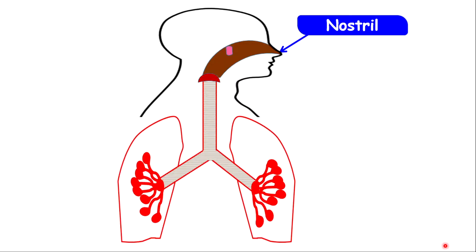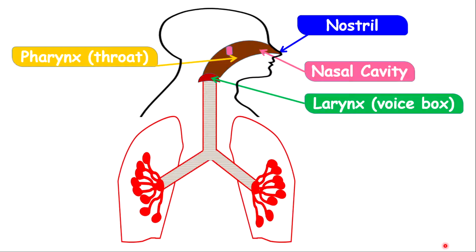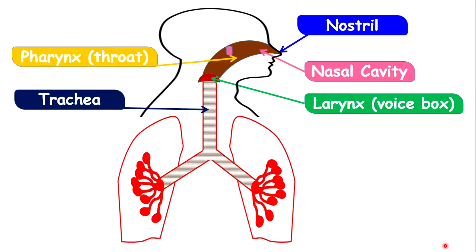We have the nostril, otherwise called the nose, and the nasal cavity. We have the pharynx, also called the throat, and the larynx, also called the voice box. We have the trachea, which is made up of rings of cartilage. These cartilage rings prevent the trachea from collapsing while food is passing through the esophagus behind the trachea, so the trachea maintains its shape.